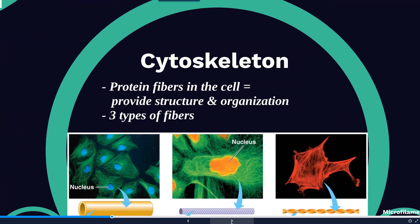Now the cytoskeleton is something we haven't touched on yet. We tend to think of cytoplasm or cytosol as just being a jelly-like fluid, but there are actually protein fibers in the cell that provide more structure and organization to that cytoplasm. There are three types of fibers that make up or comprise the cytoskeleton.